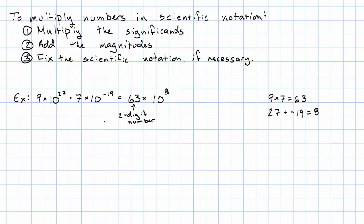Well, I make this into scientific notation in its own right. Most significant, least significant, and then the magnitude is just 1. 6.3 times 10 to the 1. So we have 6.3 times 10 to the 1 times 10 to the eighth. So we'll get 6.3 times 10 to the ninth.